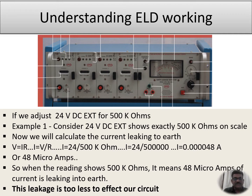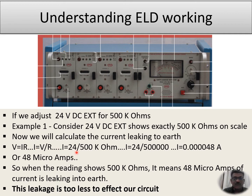Let us take two examples. If we adjust 24 volts external for 500 kilo ohms — what does it mean? Consider 24 volts external is exactly 500 kilo ohms on scale, showing a leakage resistance of 500 kilo ohms. Now if we calculate the current leaking to earth using V = IR, which gives I = V/R = 24 volts divided by 500,000 ohms, we get 48 microamps.